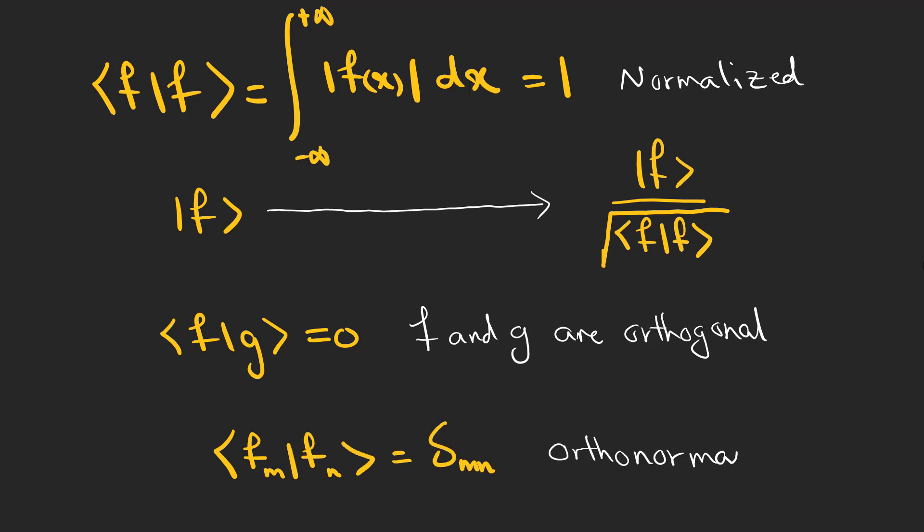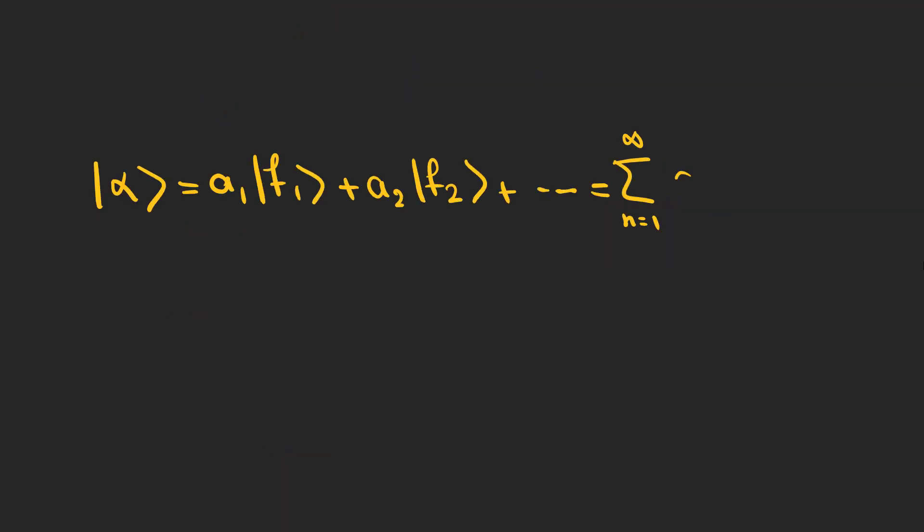Now, let's combine these two concepts. A set of functions are orthonormal if they are normalized and orthogonal. If we can express any other function as a linear combination of these orthonormal functions, the set is called complete.